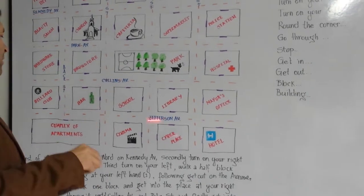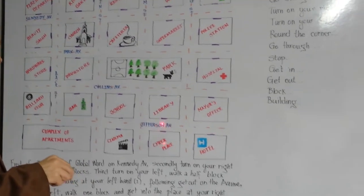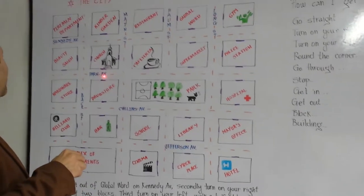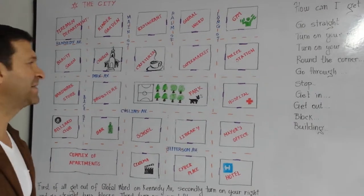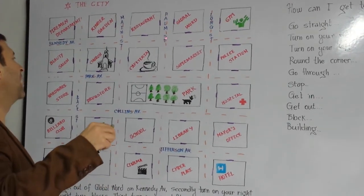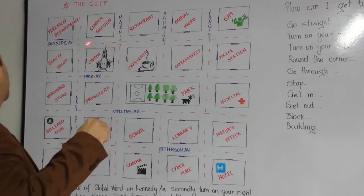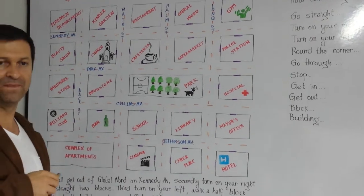Y recordemos que podemos tener los nombres de las avenidas. In this case: Jefferson Avenue, Collins Avenue, Park Avenue, and Kennedy Avenue. Igualmente podemos tener los nombres de las calles: Long Street, Palm Street, Main Street, and Back Street.